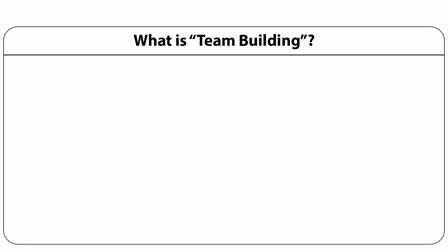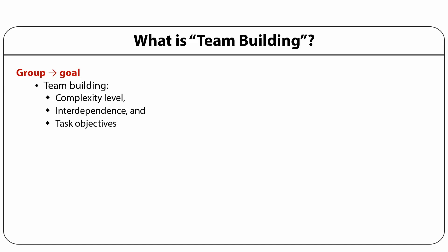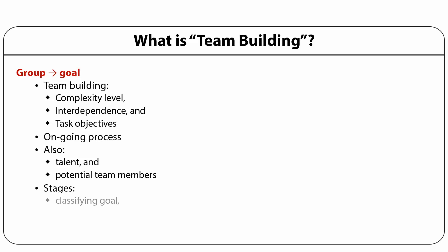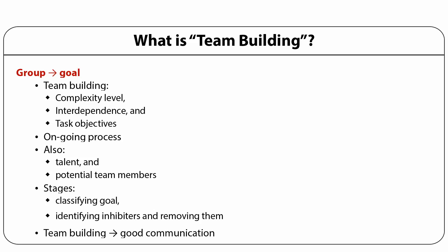How do we build a team and what is team building about? A team is a group of people working towards a common goal. Therefore, team building is the process of enabling that group of people to reach their goal. The decision to build a team requires cautious analysis to study the level of complexity, interdependence, and objectives of the tasks. It is an ongoing process. Apart from identifying and roping in potential team members, the stages involved in team building also include clarifying the goal, identifying the inhibitors and removing them. Team building leads to good communications with participants as team members and individuals. A team relies heavily on collective work products, while single-leader units depend heavily on individual work products.